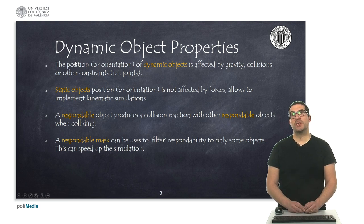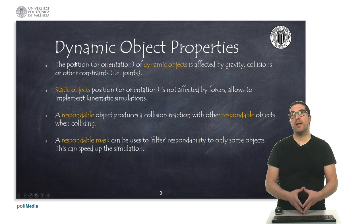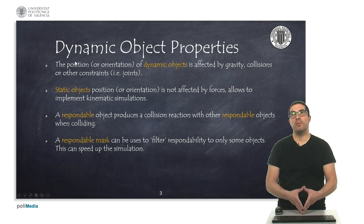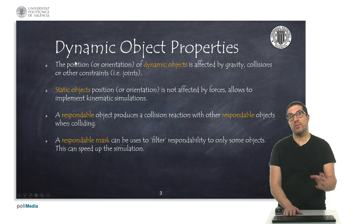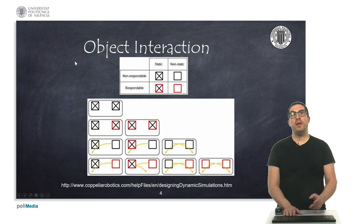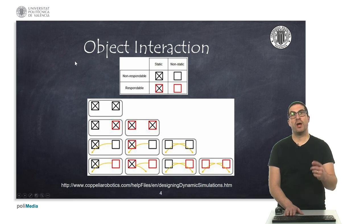So in addition to these, objects can also be reactive. Reactive is a property which is known in this simulator as respondable. Basically, it implies that a reactive object can react against another object, also another reactive object, if there's a collision. Here I will explain the object interaction map, so if you want to get further information, you have to follow the link I show you below.